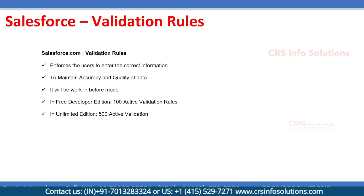Welcome to CRS Info Solutions. In this session we are going to cover validation rules, which help us to maintain good data in the database. They enforce users to enter correct information and help maintain data accuracy and quality. Validation rules always work in before-save mode — they fire before the record is saved. In the free edition you can have 100 active validation rules per object; in the unlimited edition up to 500. Let's see a demo with a use case.